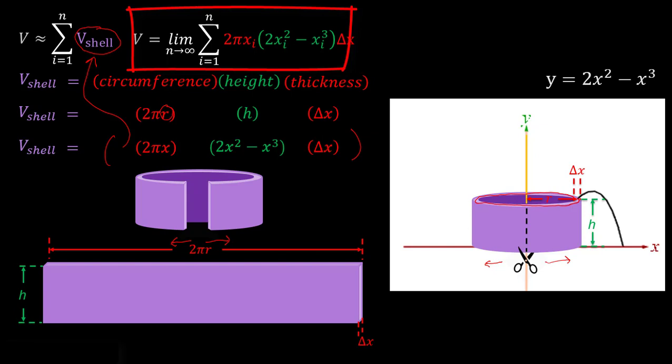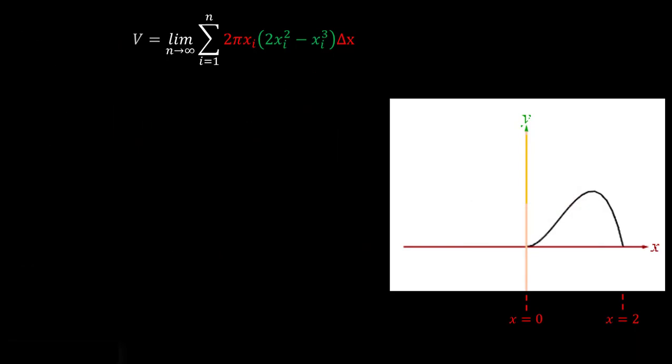Now from here, we can easily translate this infinite sum into an integral based on the definition of the integral. So let's clear some of this out here and go ahead and evaluate. So this is our infinite sum. We translate that. So you notice our delta x just became our dx, and all of our x sub i terms just became x terms because now we're operating on a continuum of x values.